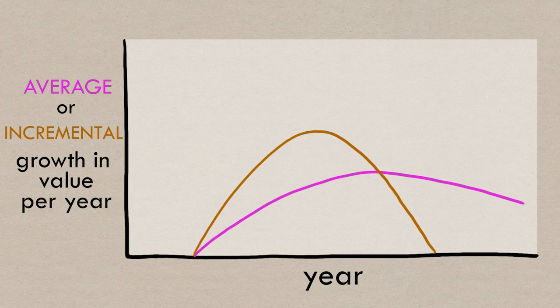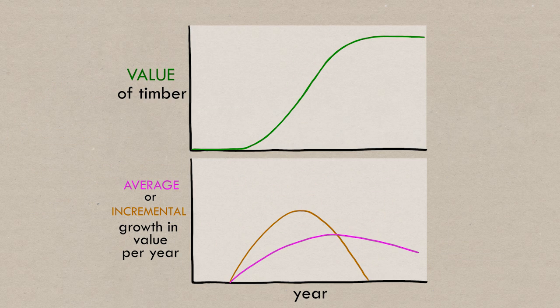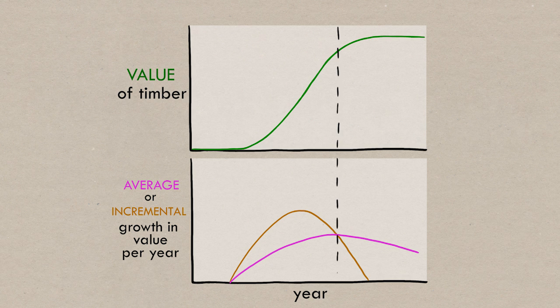So if we want to find the optimal rotation age, it's the same thing, we're trying to find the spot where the average growth is maximized. So on this graph it's here, and the incremental growth line will cross the average growth line at this maximum. That's fine, but we can't make a decision based just on revenue. We have to include some costs in here too.